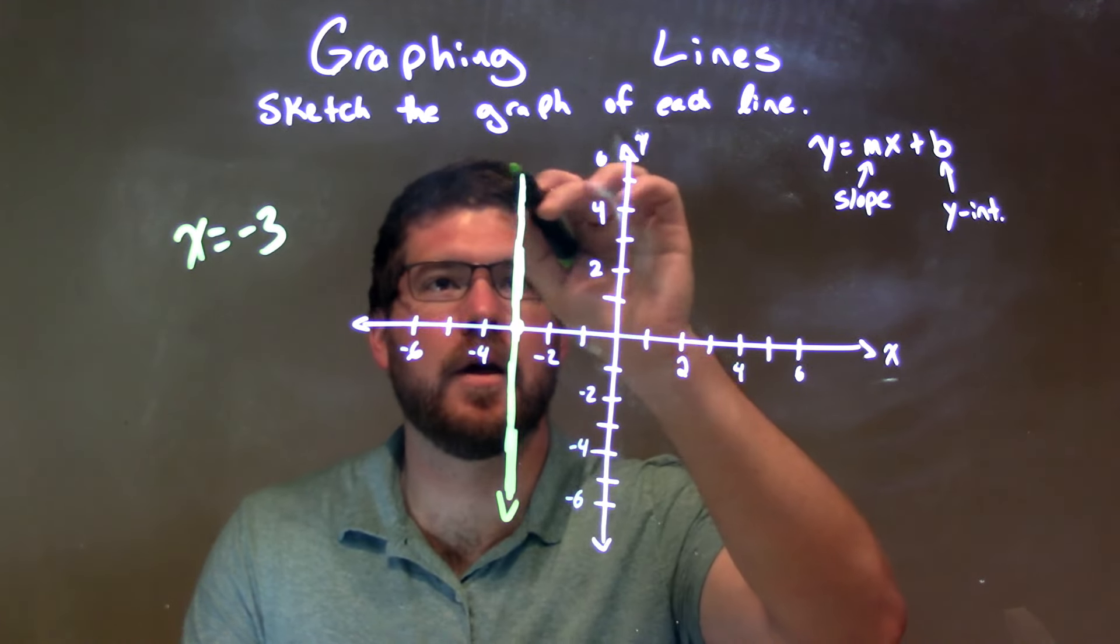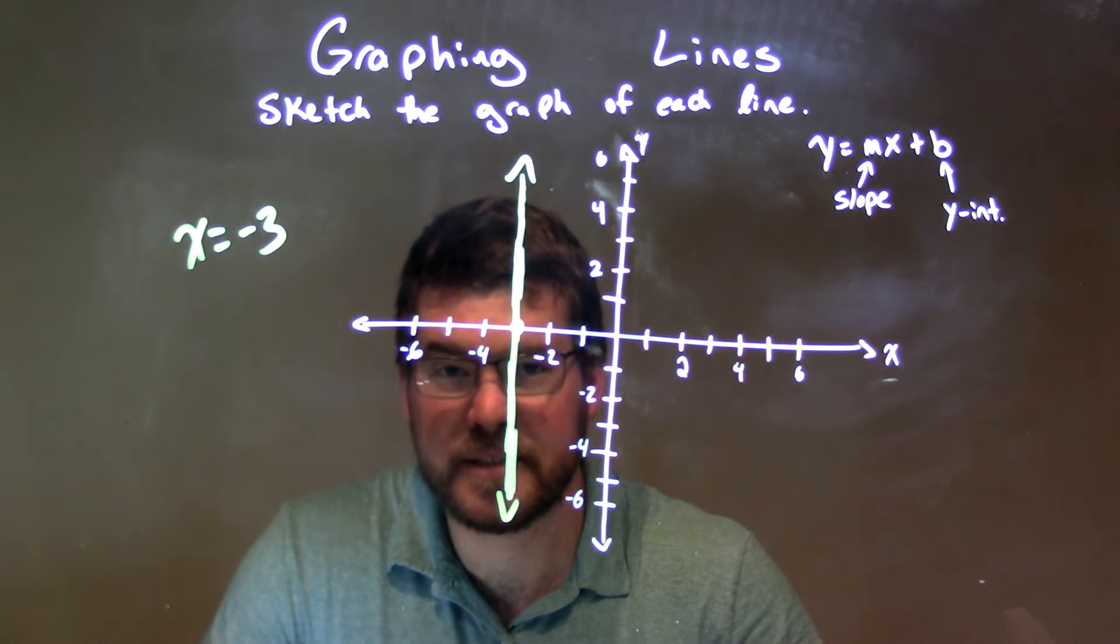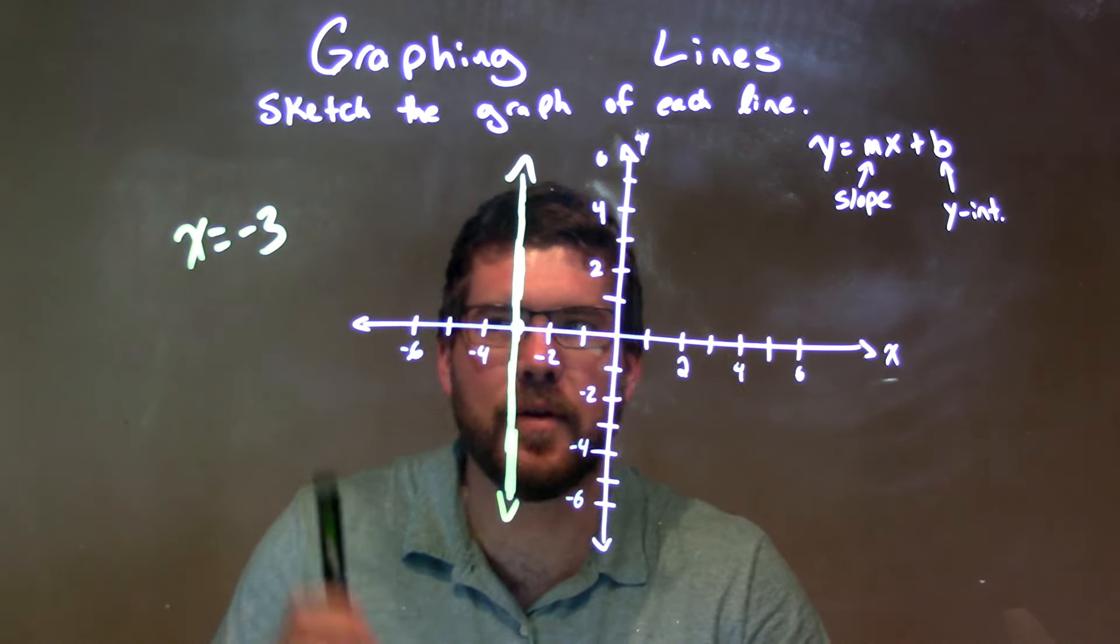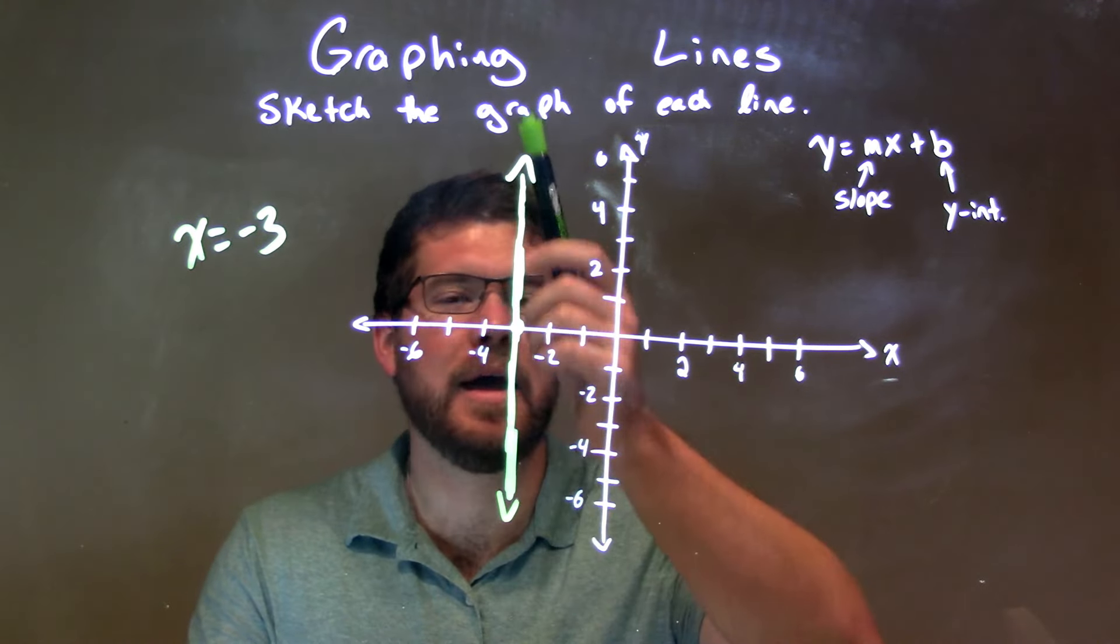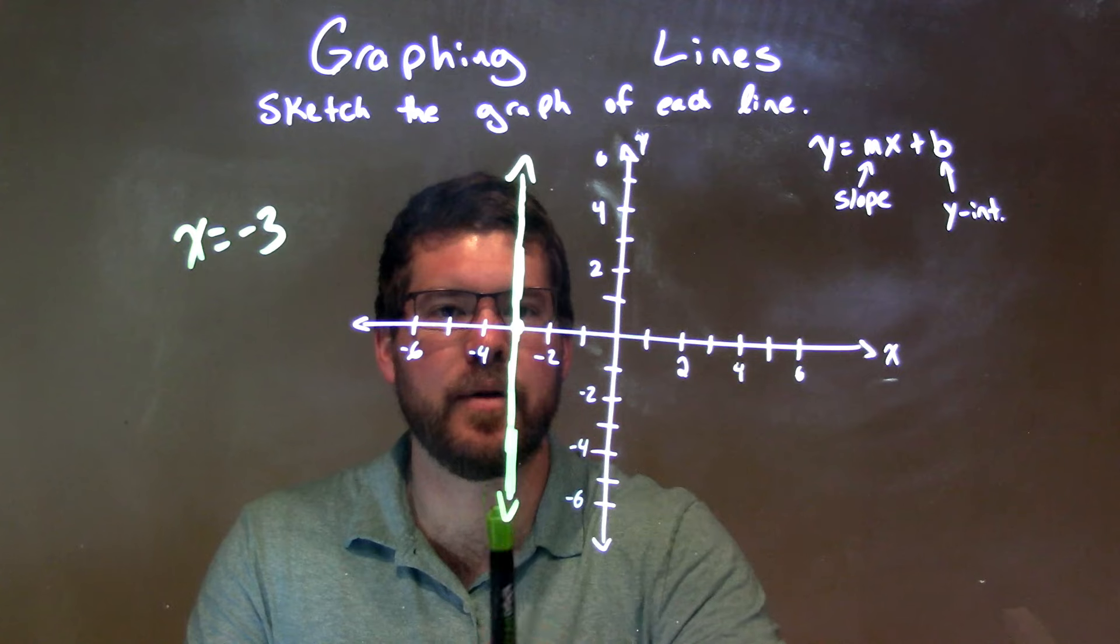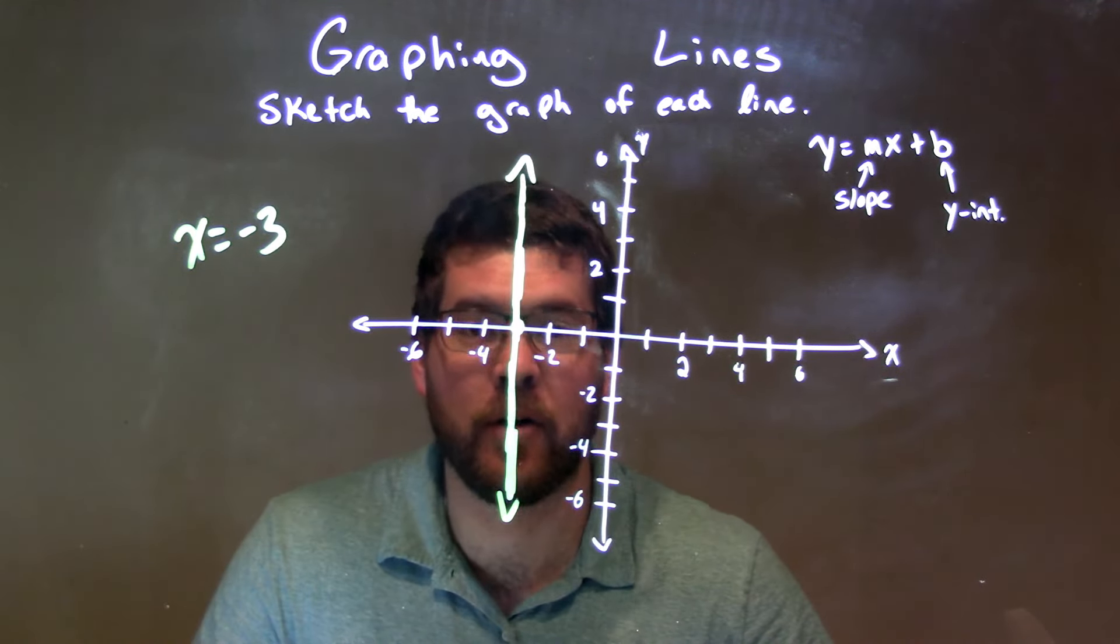And then we have our graph. So, again, recap, very simple if you know what it is. When you see x equals a number, it's just a vertical line. So, we drew a vertical line through x equals negative 3 right there. Negative 3 right there, x equals negative 3, and then we have our answer.